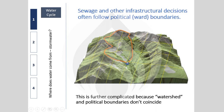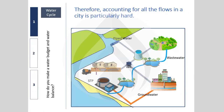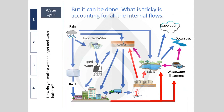A watershed is defined with respect to a predefined outlet point — it is the collection basin from which all water flows to that point. Political decision-making and government agencies operate within ward or census boundaries, but water flows according to watershed boundaries. This mismatch makes everything more complicated, because tracking where water came from, how much arrived, and where it went requires integrating across different administrative systems.